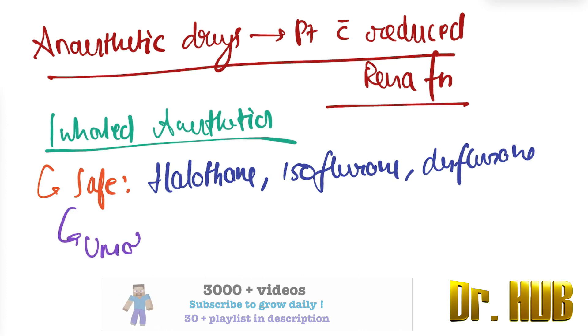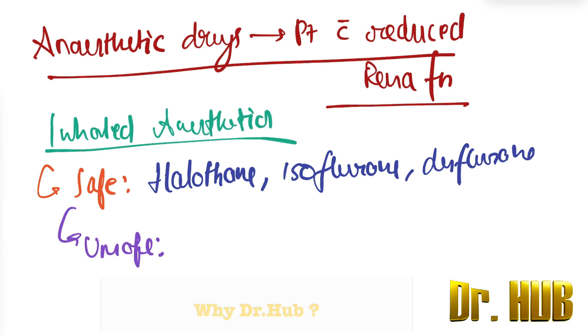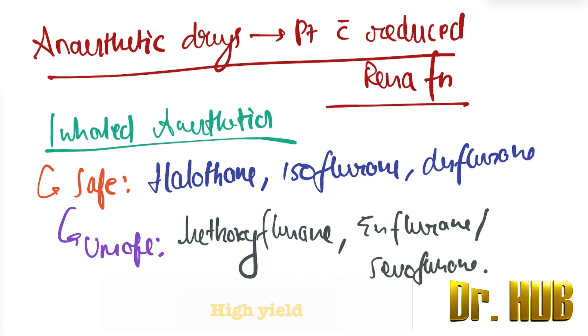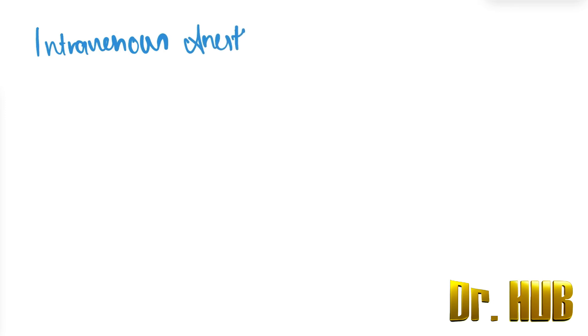The unsafe inhaled anesthetics include methoxyflurane, fluorane, and enflurane. All of these come under the unsafe category.